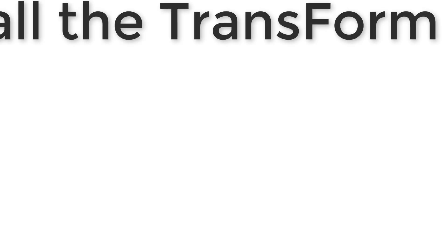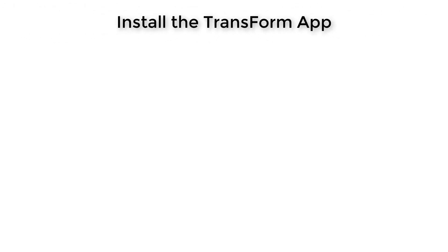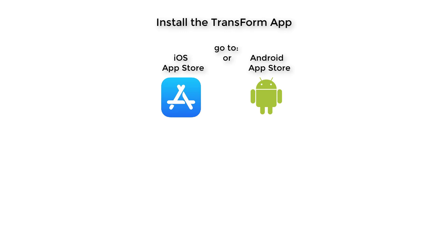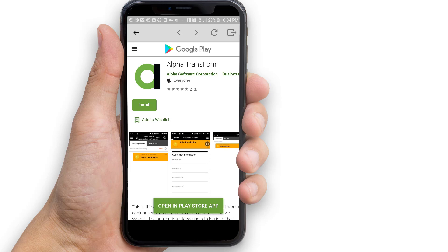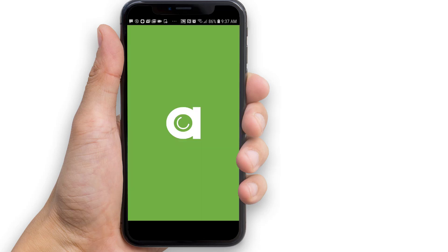To view our form, we first need to install the Alpha Transform mobile app. Go to the iOS or Android App Store. Once there, simply search for Alpha Transform, or if you prefer, you could use your mobile device to scan one of these QR codes shown on the screen. Select Alpha Transform from the search results and install the app.